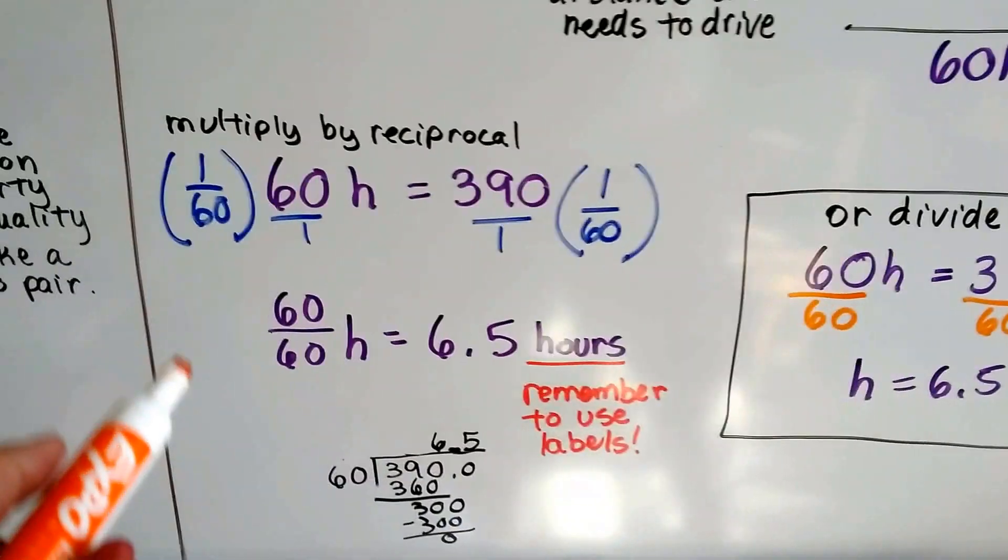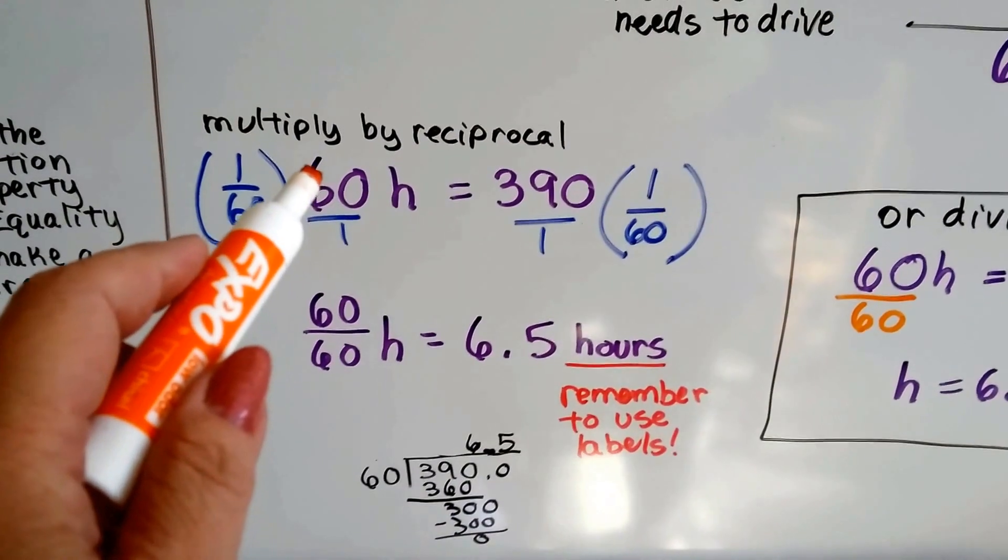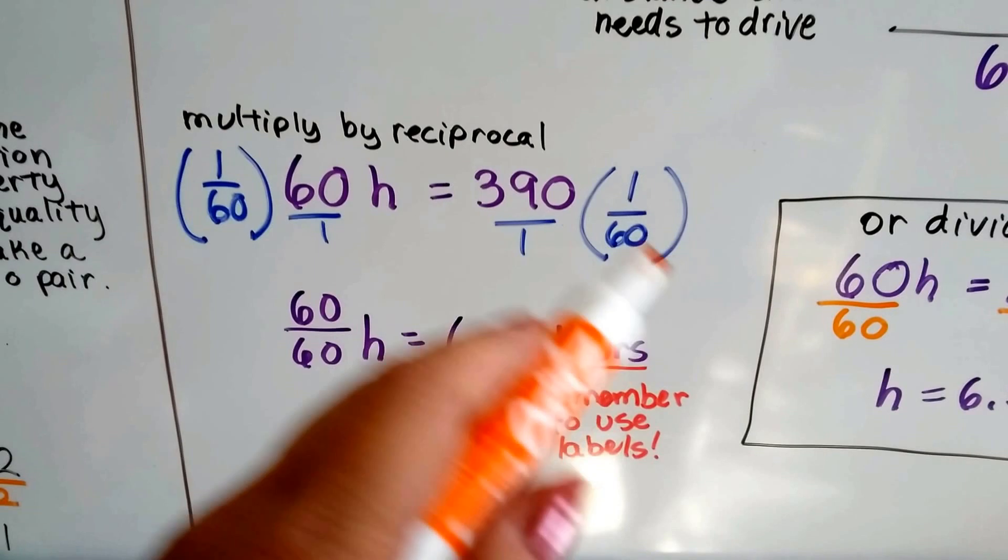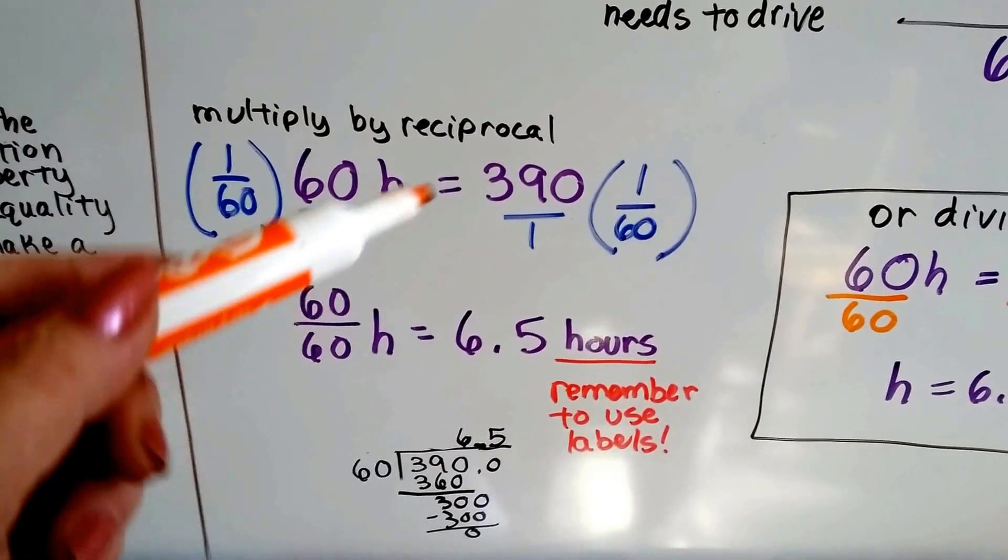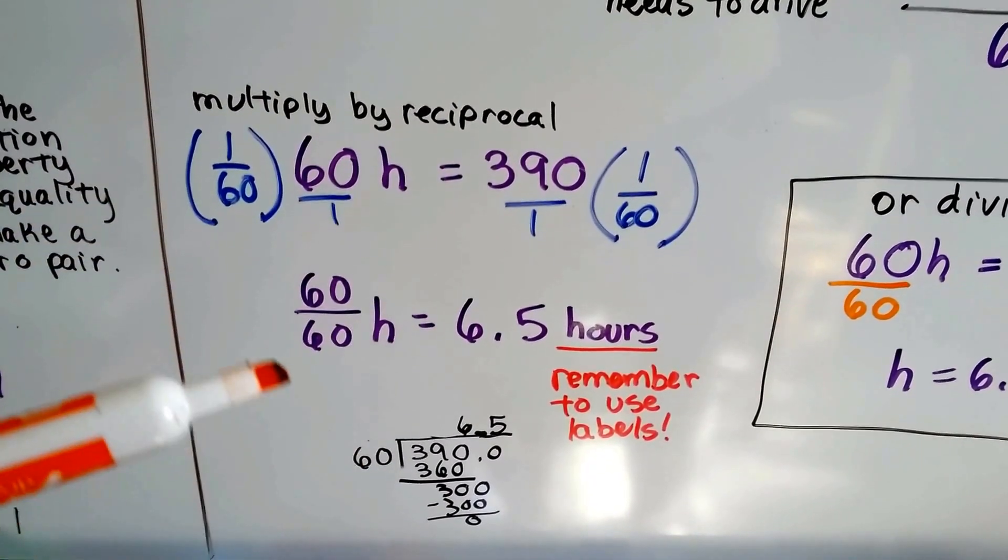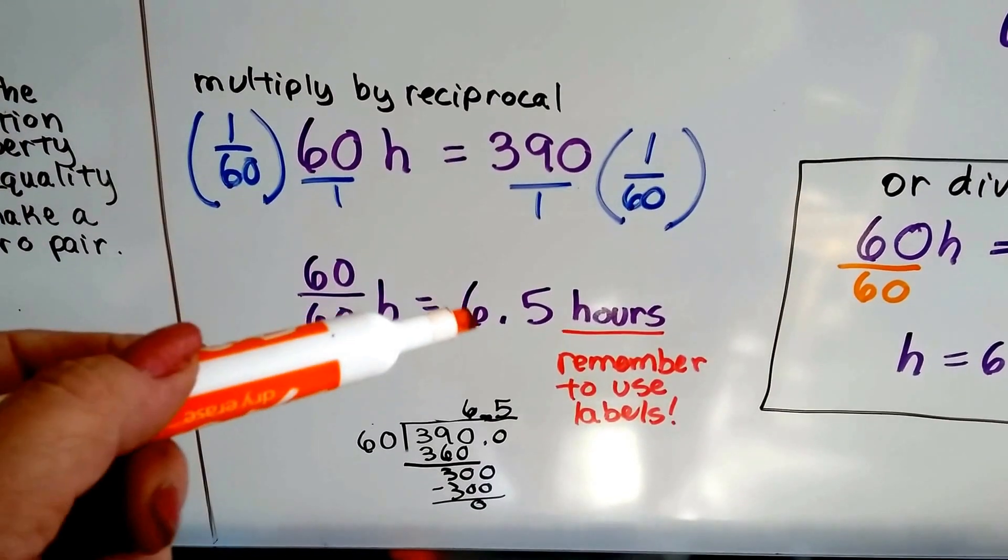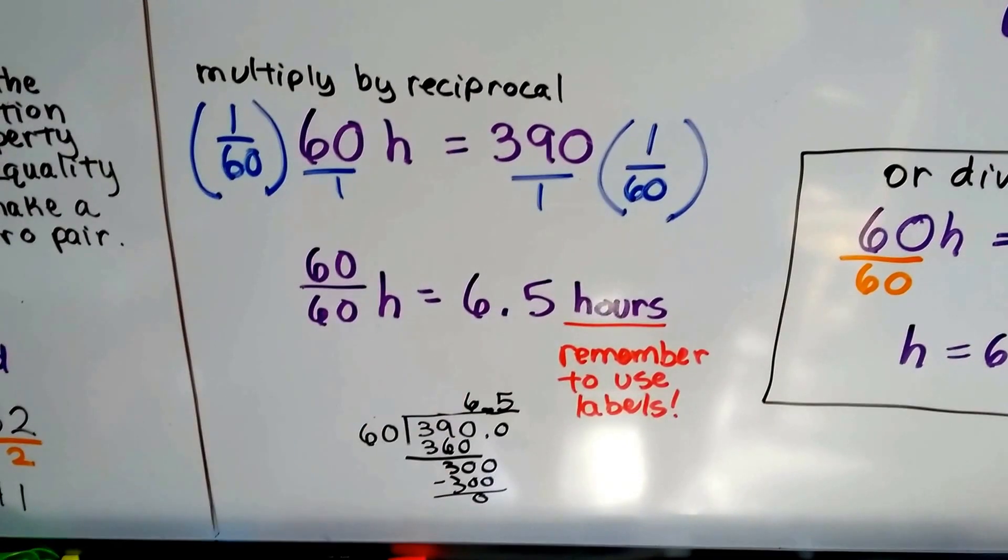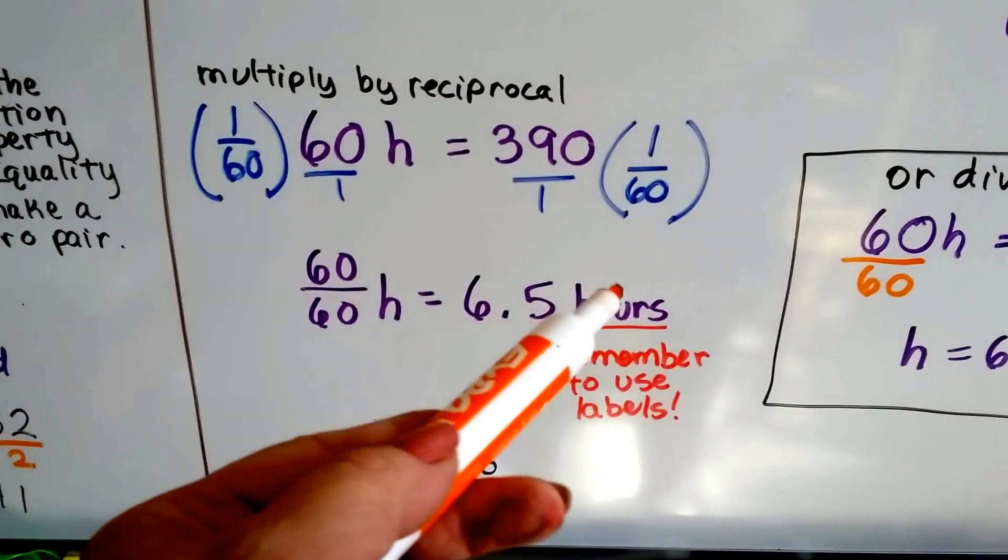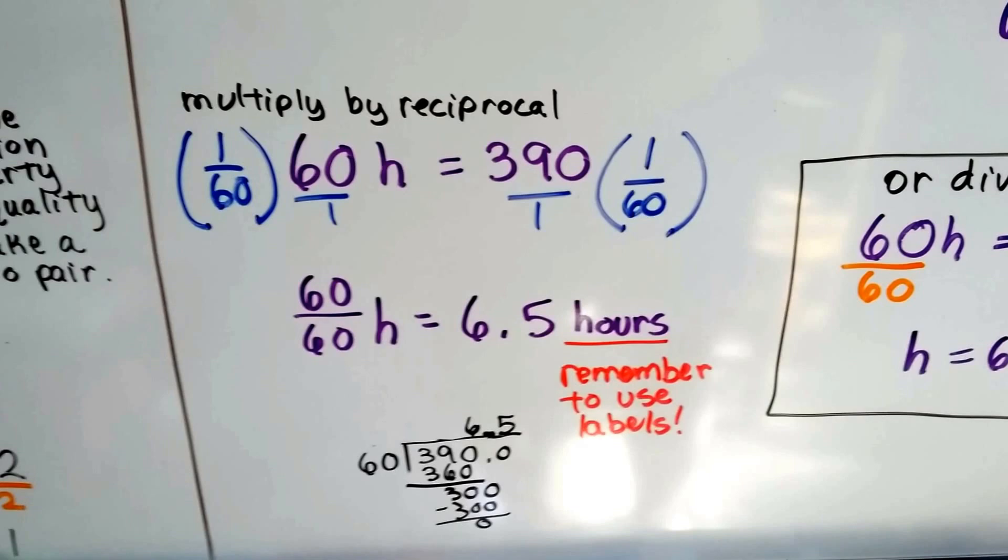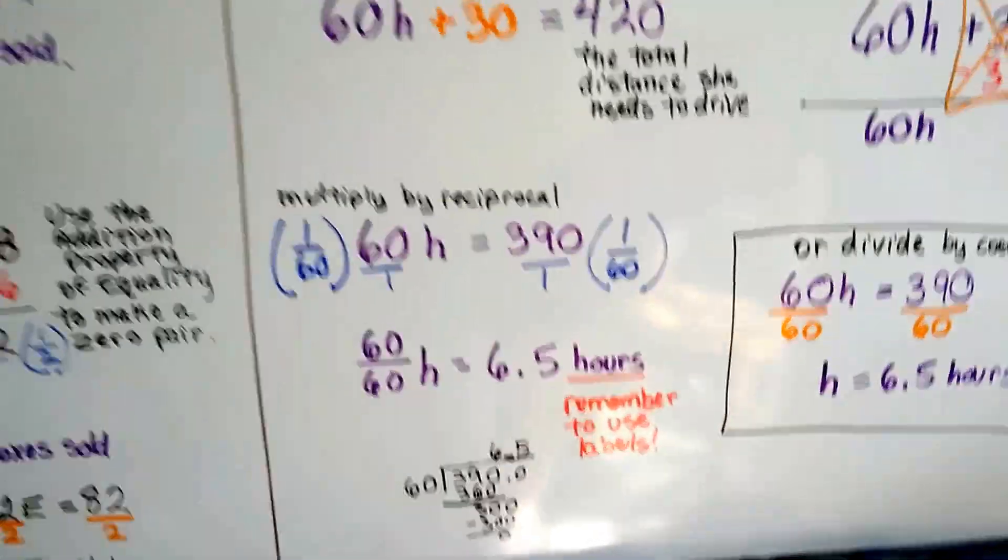We could have also multiplied both sides by the reciprocal of the 60 as a 60 over 1 to 1/60th on each side of the equation. And we would have gotten 390 over 60 and 60 over 60, and it would have come out as 6.5 hours. Just remember to use the labels. You don't want to say 6.5 miles. It's 6.5 hours. Labels are very important in word problems.